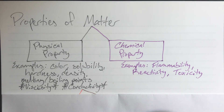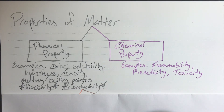Viscosity and conductivity are also physical properties. Viscosity means resistance to flow, and conductivity is whether or not it will conduct electricity. The other classification of a property of matter is a chemical property.